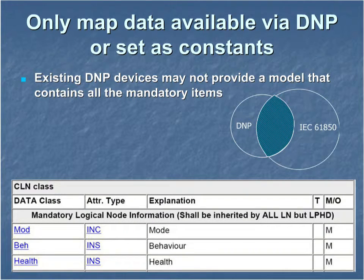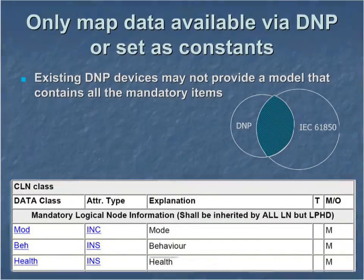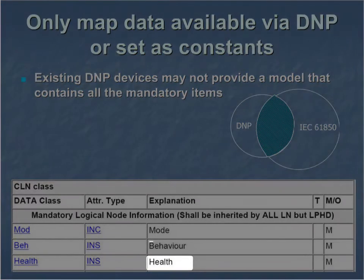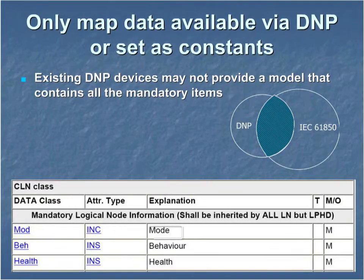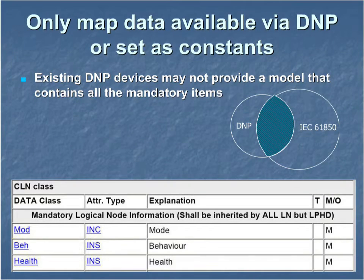In IEC 61850, the CLN class is mandatory for all logical nodes. Attributes such as health, behavior, and mode were created as part of the IEC 61850 object model, and typically are not included in an existing DNP3 database. Therefore, this information will not be available through the real-time DNP3 data mapped to IEC 61850.